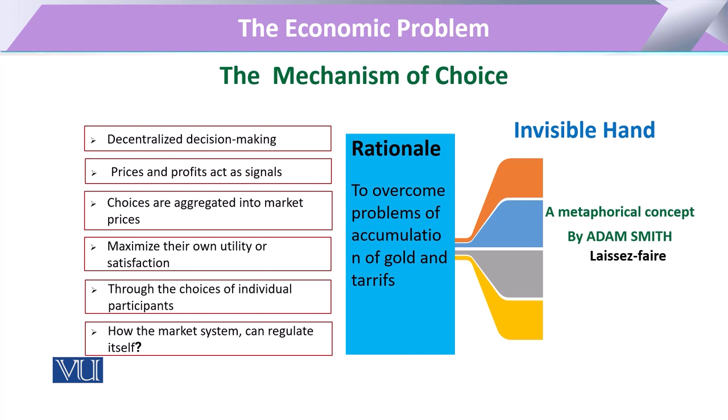As per Adam Smith, markets should be able to self-correct or self-regulate. There should be a force invisibly available in the markets that gives the energy or the system to those markets so that if any irregularity, increase, or decrease comes to the surface, it can correct itself. For example, if the price of any commodity increases, it will provide a signal to the producer.